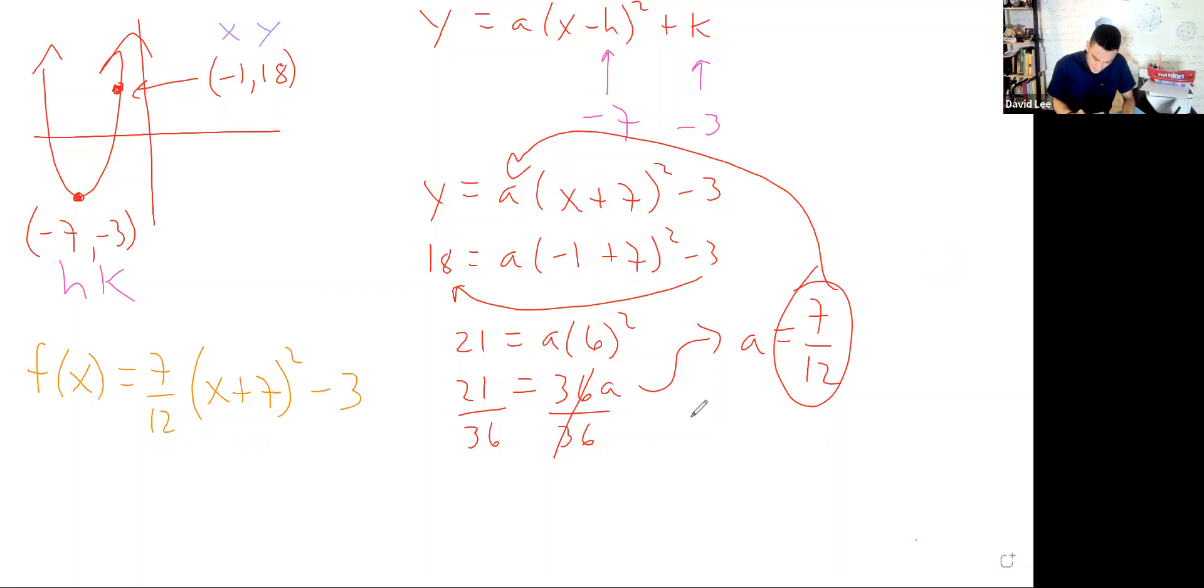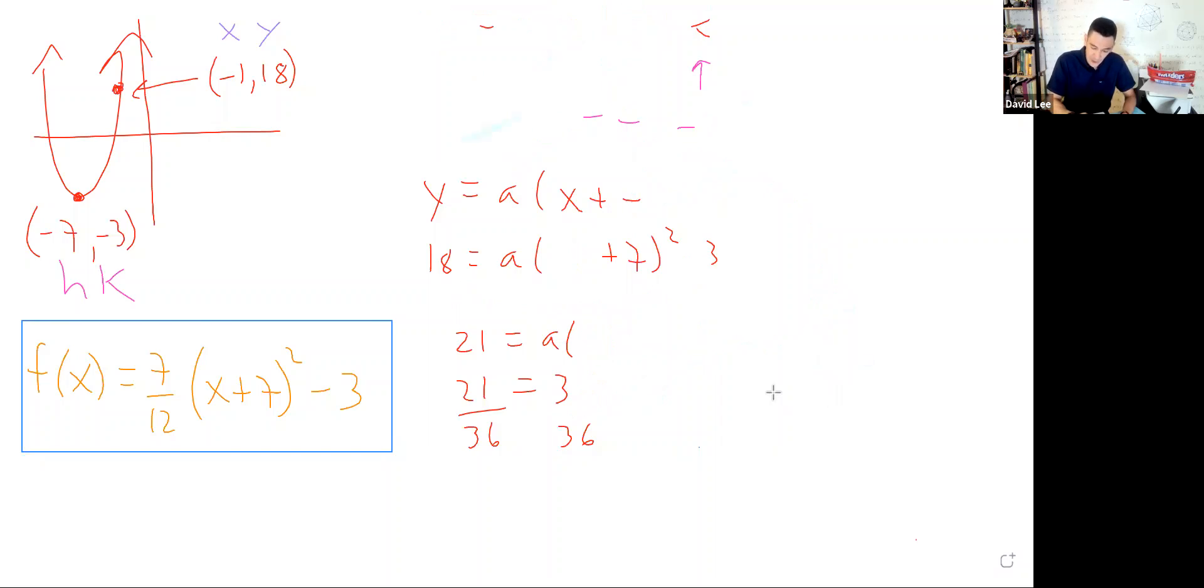Let me change the color to blue and put a rectangle around this. That is 1a, where you write the equation of the given parabola. Now let me erase all these things here, we don't need these for the next part. Now we can go and find the intercepts.